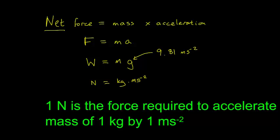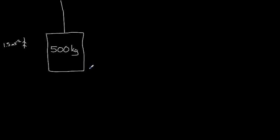Let's take a look at an example. In this first problem we have a lift or elevator with a total mass of 500 kilograms and it is accelerating up the lift shaft at 1.5 metres per second squared. The question is, what is the tension in the rope pulling the lift up the shaft?